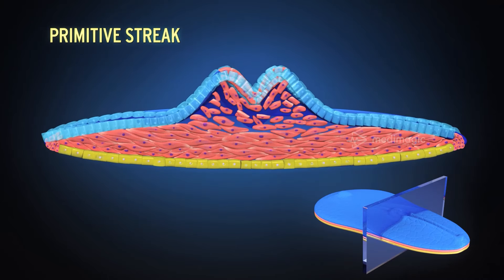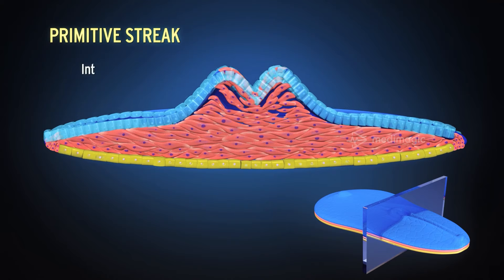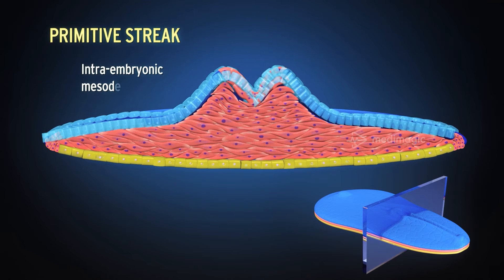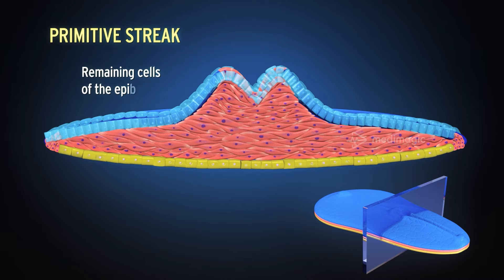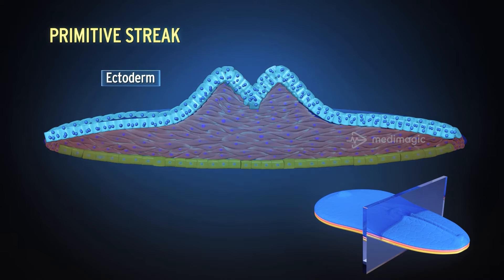These cells form the intra-embryonic mesoderm. Later, the remaining cells of the epiblast give rise to the ectoderm.